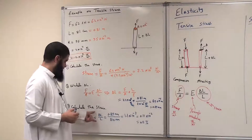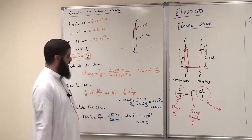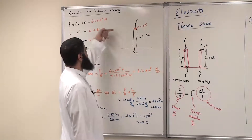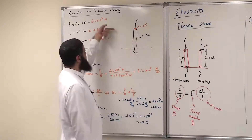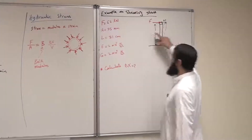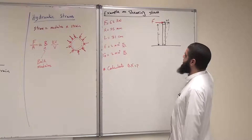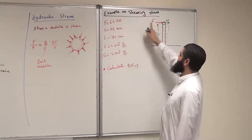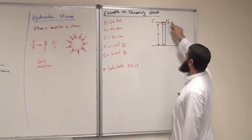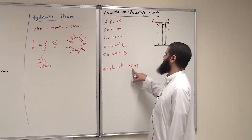Now let's take the same rod, but apply the force from the side — not along the length, but perpendicular to it. It is the same rod: same length of 81 cm, same radius of 9.5 mm, same force, but now the force comes from the side. As a result, the rod will be twisted, and we want to find this deflection delta x.